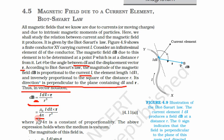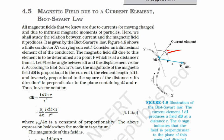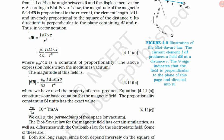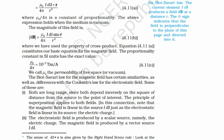Since this is a proportionality, we need a proportionality constant, which is μ₀ upon 4π. Mu is the permeability of the material, and μ₀ is the permeability of the vacuum. The above expression holds when the medium is vacuum, because only for vacuum it is μ₀; otherwise it is μ.